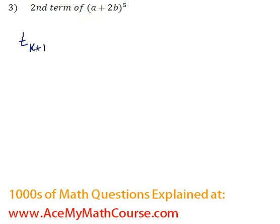term k+1 equals nCk times the first term to the power of (n - k), times y, which is the second term, to the power of k, where n is the exponent.